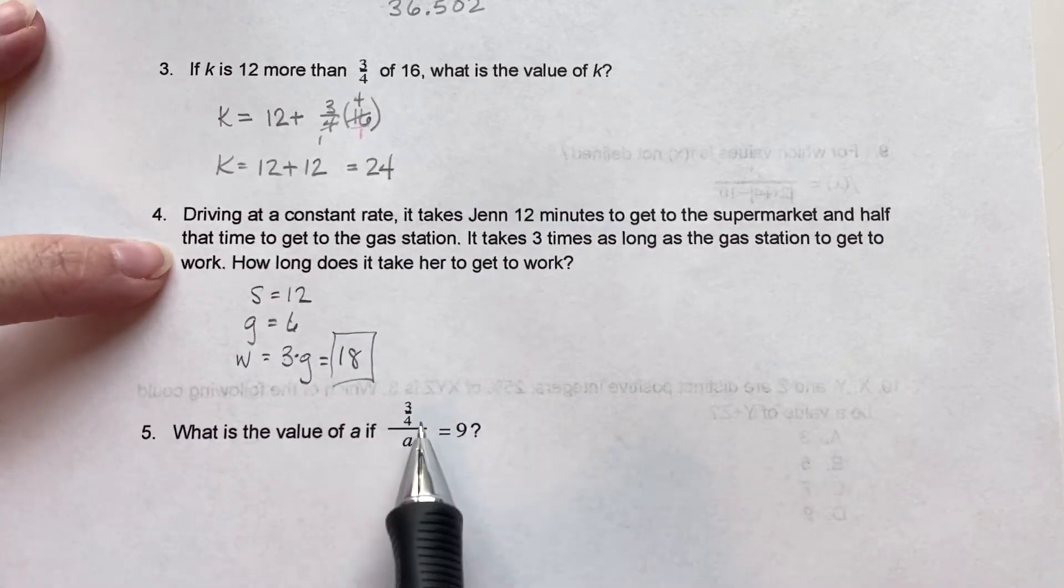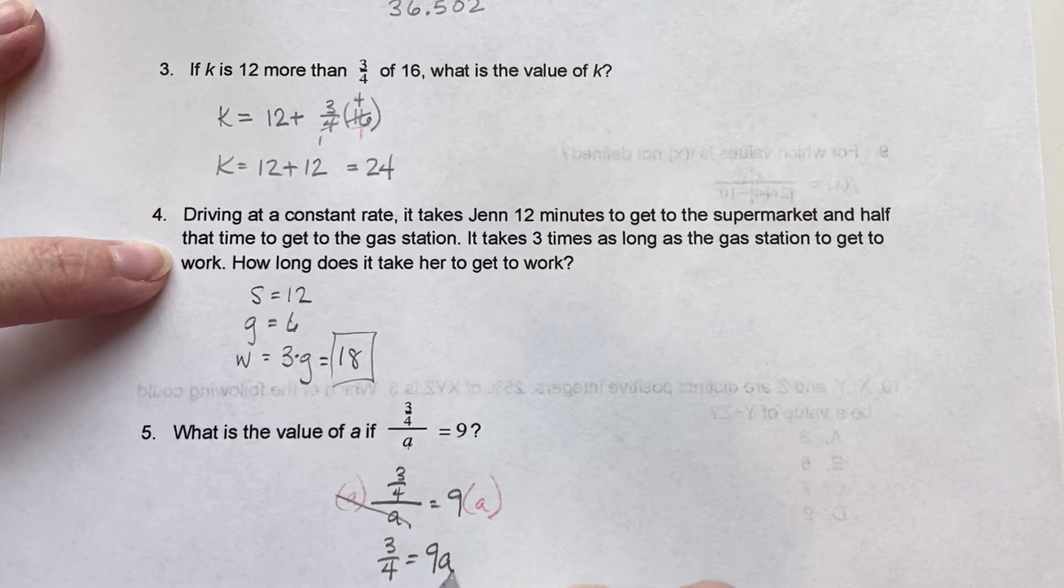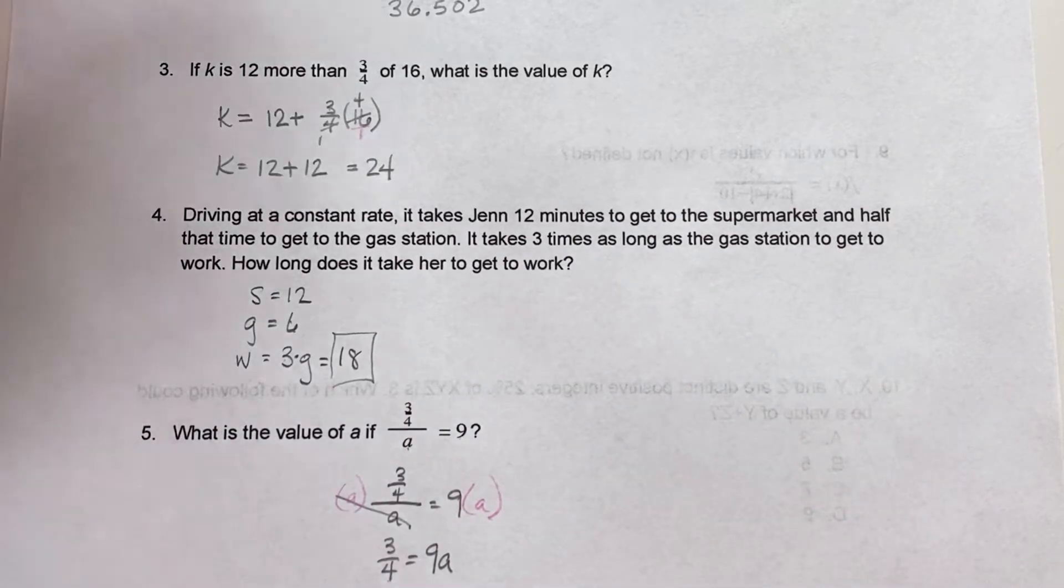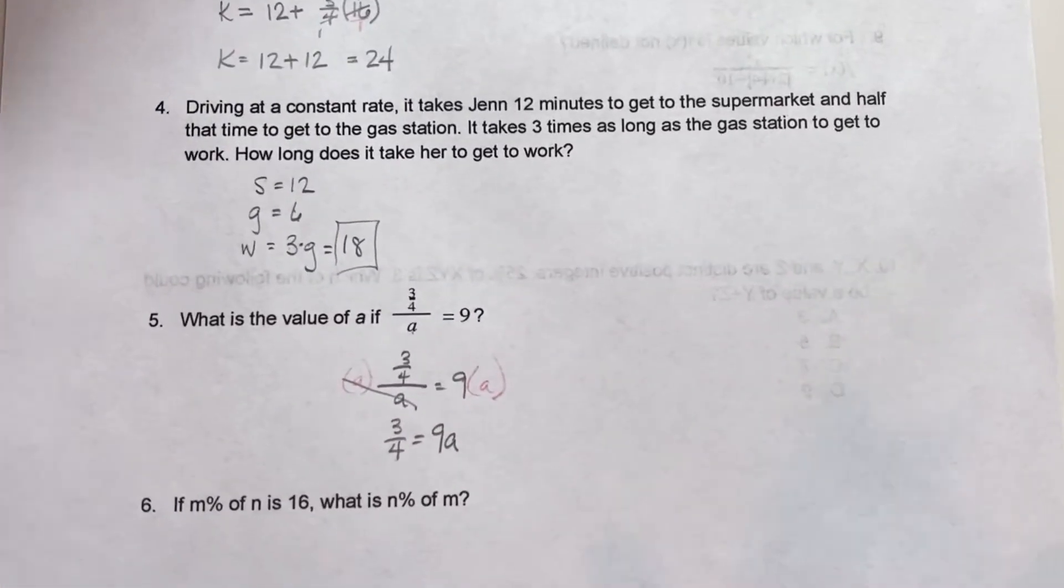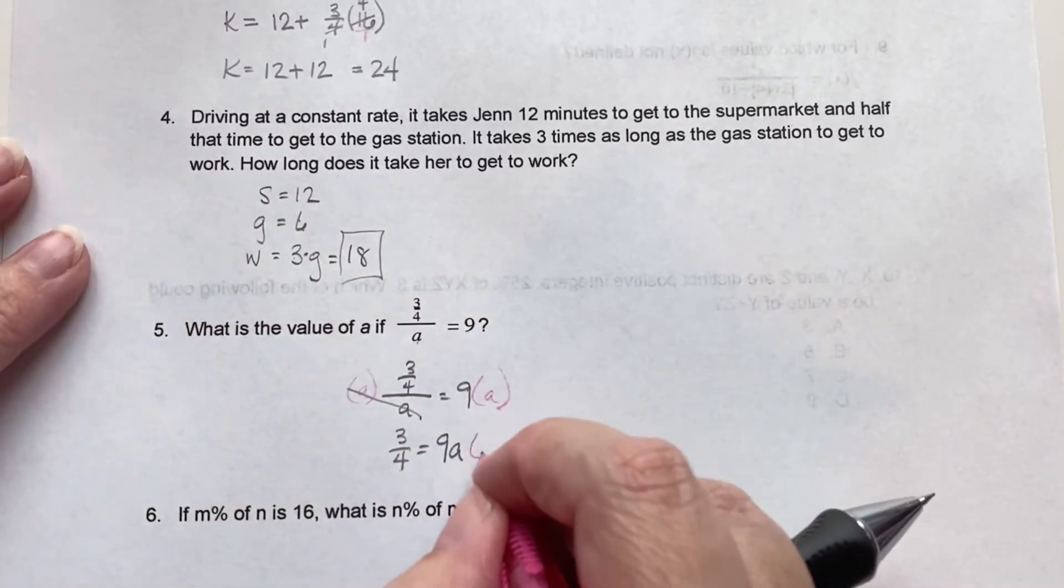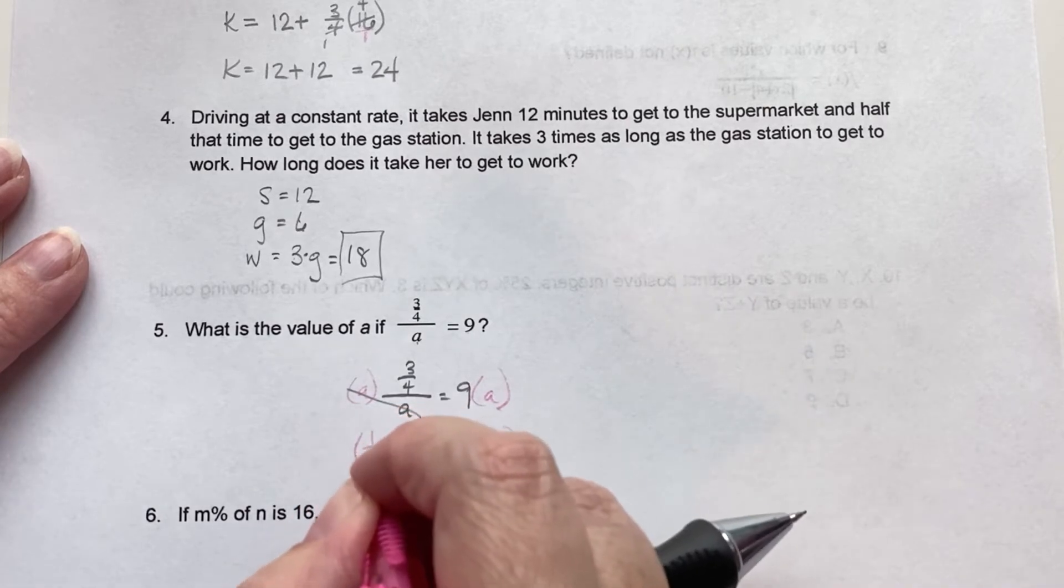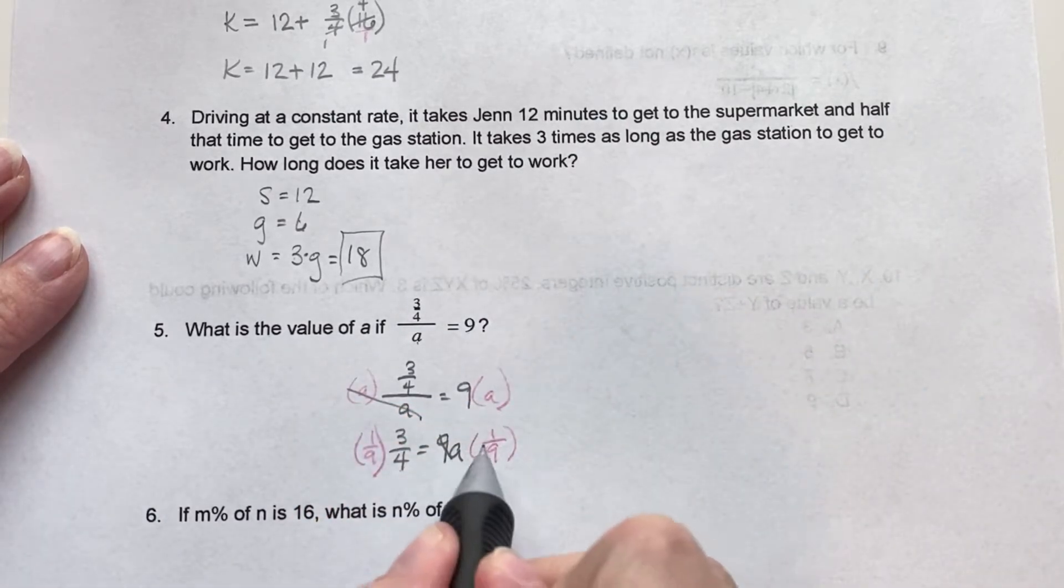What is the value of a if 3 fourths divided by a equals 9? The first thing we're going to do is multiply both sides by a. That cancels here. We get 3 fourths equals 9a. And then we're going to divide by 9. But since we have a fraction over here, we're actually going to multiply by 1 ninths.